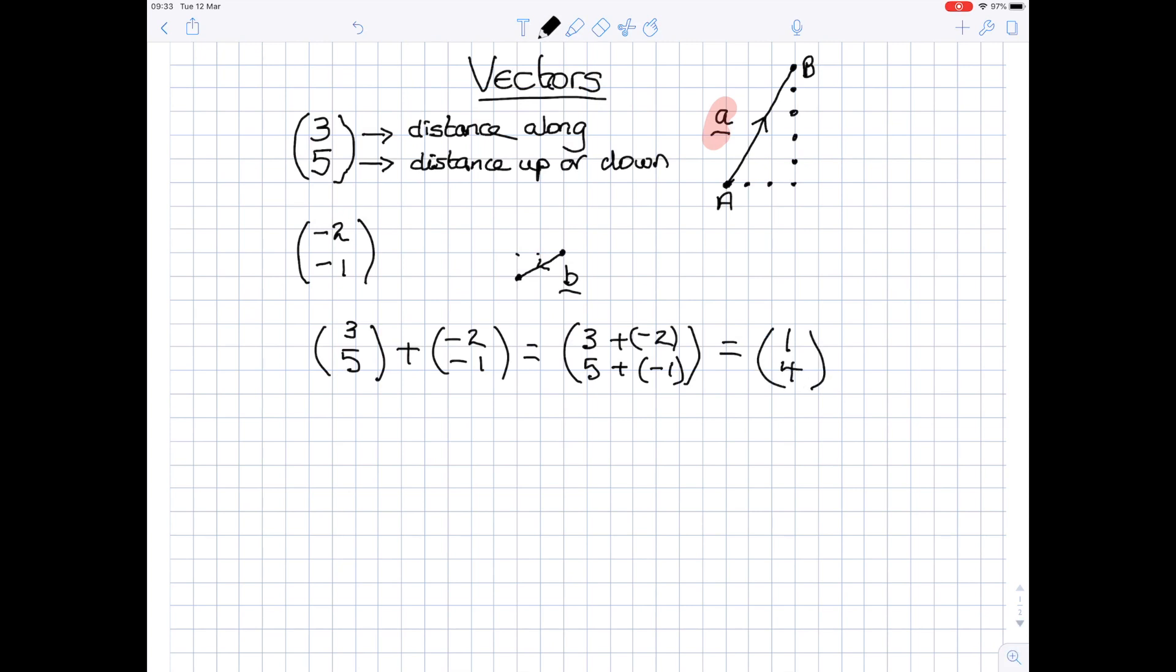You can take two vectors away from each other. So (3, 5) take away (-2, -1). Again, treat the top and the bottom separately. So I will have 3 - (-2) at the top and 5 - (-1) at the bottom. 3 - (-2) is 3 + 2, which is 5. And 5 - (-1) is 5 + 1, which is 6. So that results in the vector (5, 6).